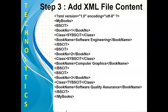Step three: add XML file content. Here you can see my root nodes are MyBooks and /MyBooks. Inside my root node, I have a parent node BSCIT. Inside my parent node, I have three child nodes: book number, class, and book name. These are my attributes. My first record is there, one is BSCIT, software engineering is my second record, and here my third record. This is how we have created and added content in the XML file.